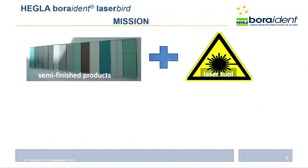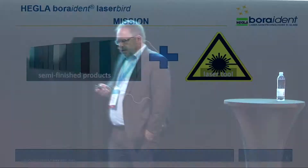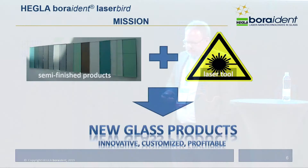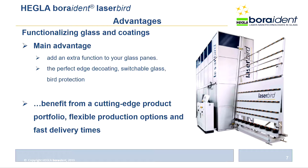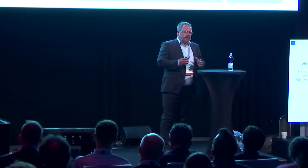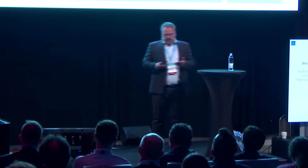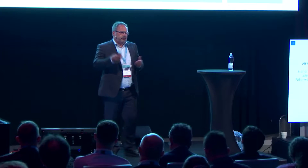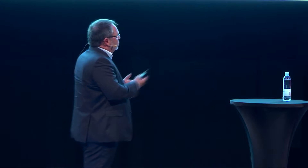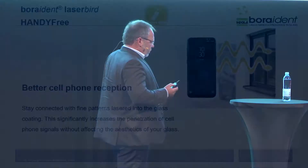Speaking about coated glass — this is a high-potential field for laser users. We developed a basic machine platform that enables new, innovative, customized, and profitable glass products. This machine has a loading area, a laser safety cabin, and inside the cabin an XY portal. On this XY portal it is possible to mount up to six different laser sources for different glass products and laser technologies, or six equal laser sources for high throughput.